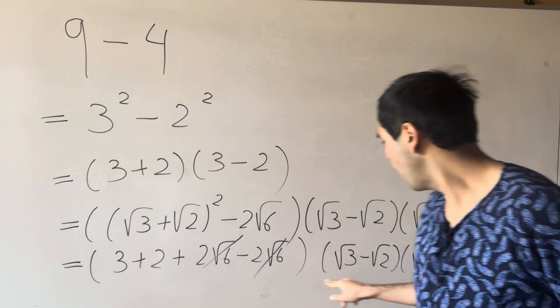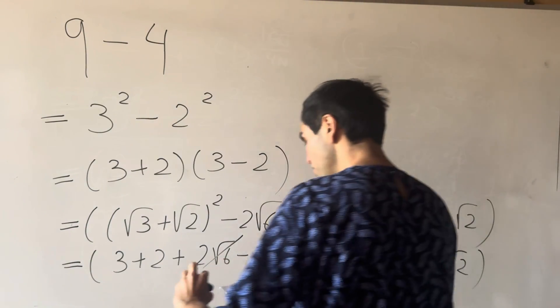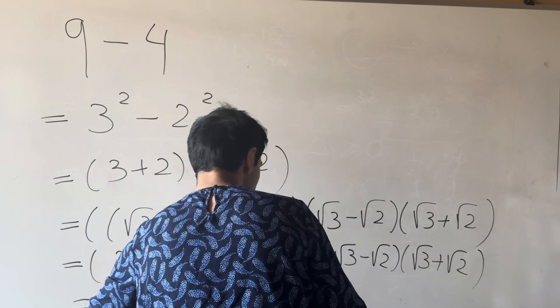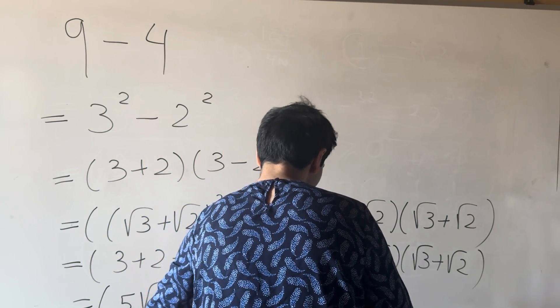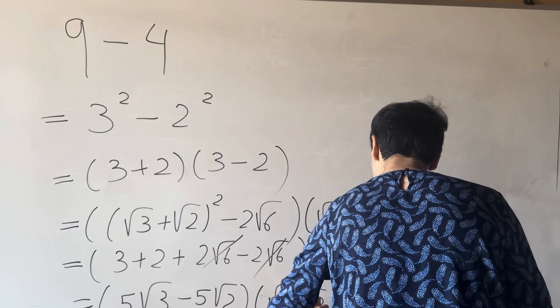So here we have 5 times square root of 3 minus square root of 2. So this becomes 5 square root of 3 minus 5 square root of 2 times square root of 3 plus square root of 2.